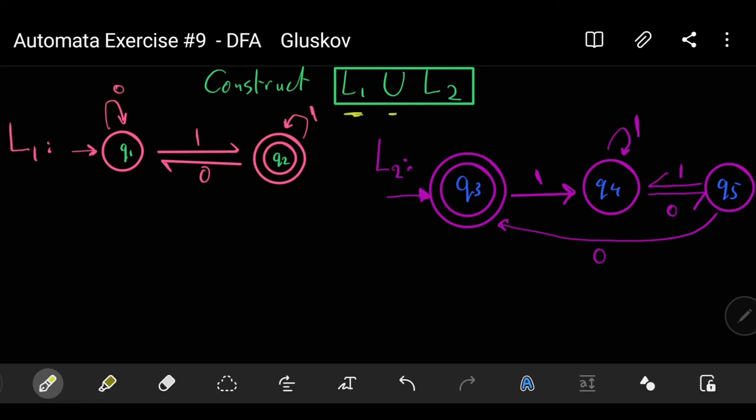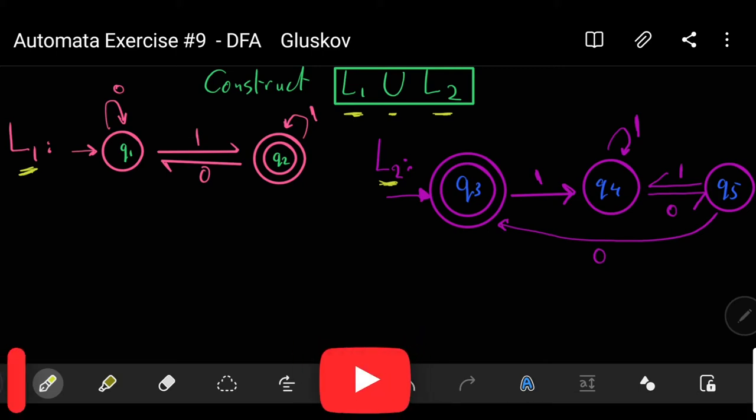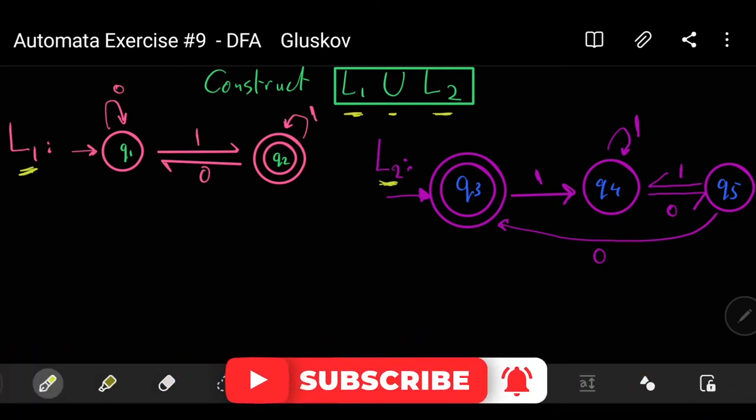In this exercise number nine, we're told to create and construct L1 union L2. This is the automaton L1 and this is the automaton L2. We need to construct an automaton that is the union of L1 and L2.